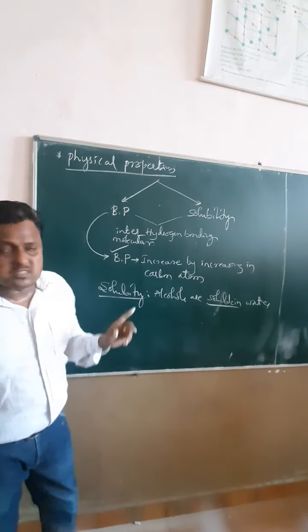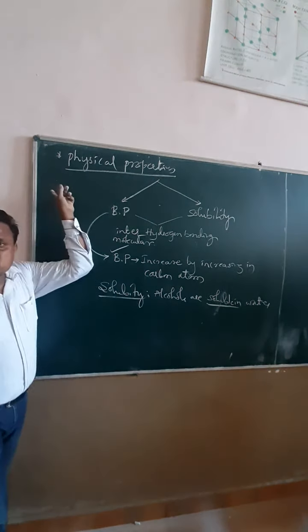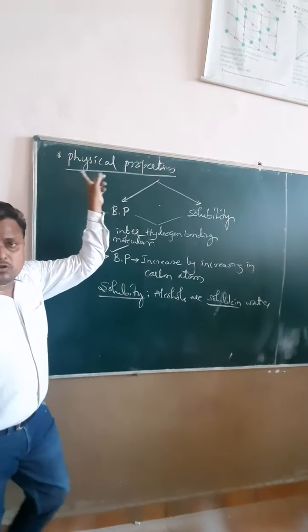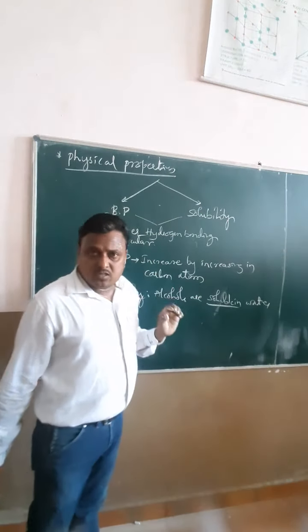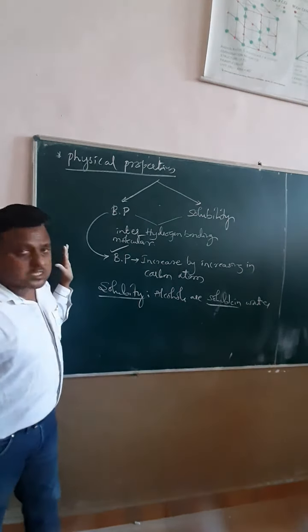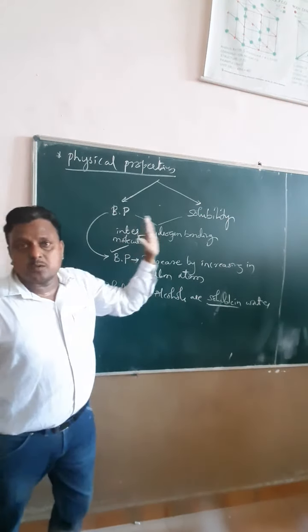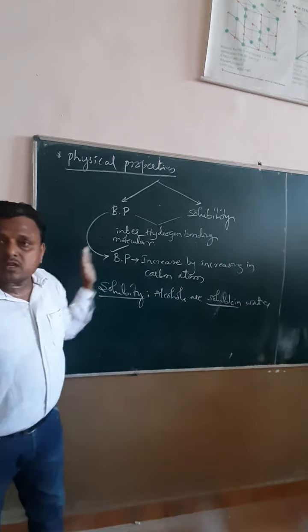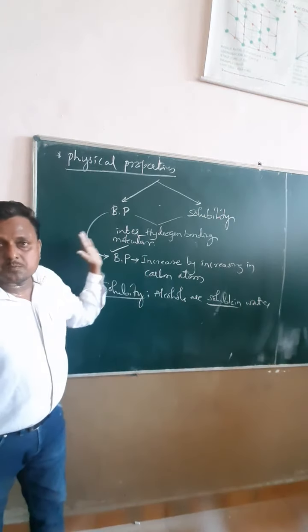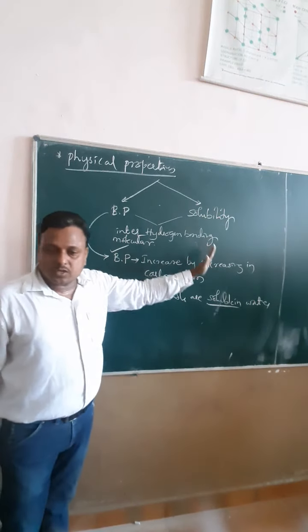Alcohols are soluble in water — this is also completely dependent on intermolecular hydrogen bonding. Alcohols are soluble in water because of hydrogen bonding. Today we covered two concepts: one is preparation of alcohol from Grignard reagent, and the corresponding physical properties — boiling point increases with increasing alkyl groups, and solubility depends on intermolecular hydrogen bonding. Thank you. We continue in the next part in the next video.